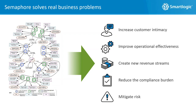They also use Semaphore to mitigate risk. For example, one client is using Semaphore to measure the level of exposure to particular risks in real time so they can optimally price the risks they are being asked to undertake.